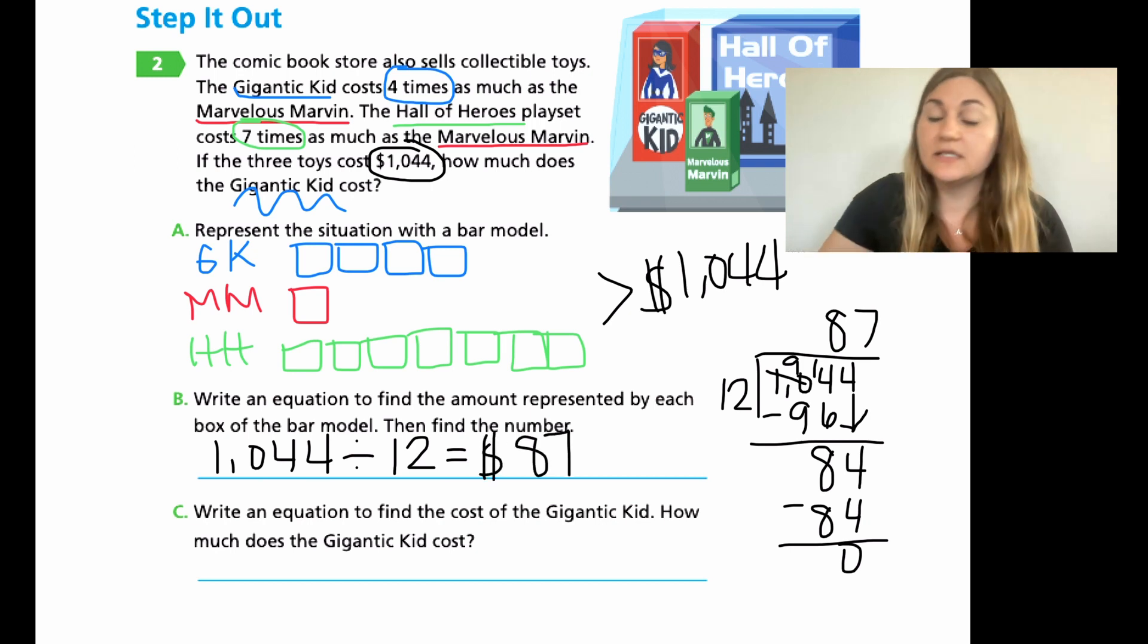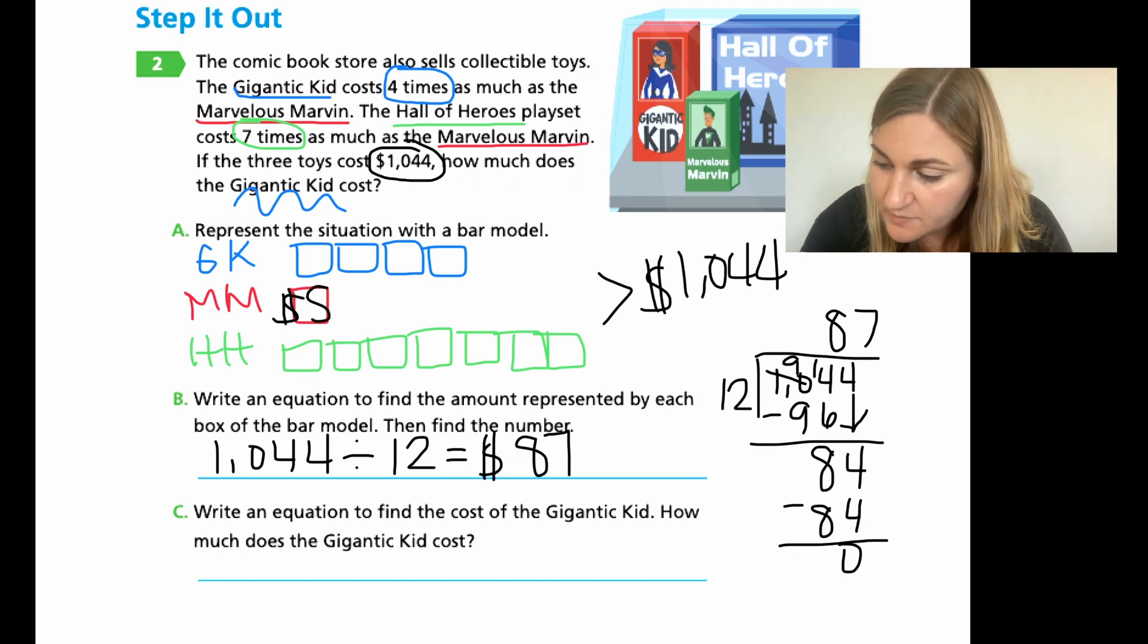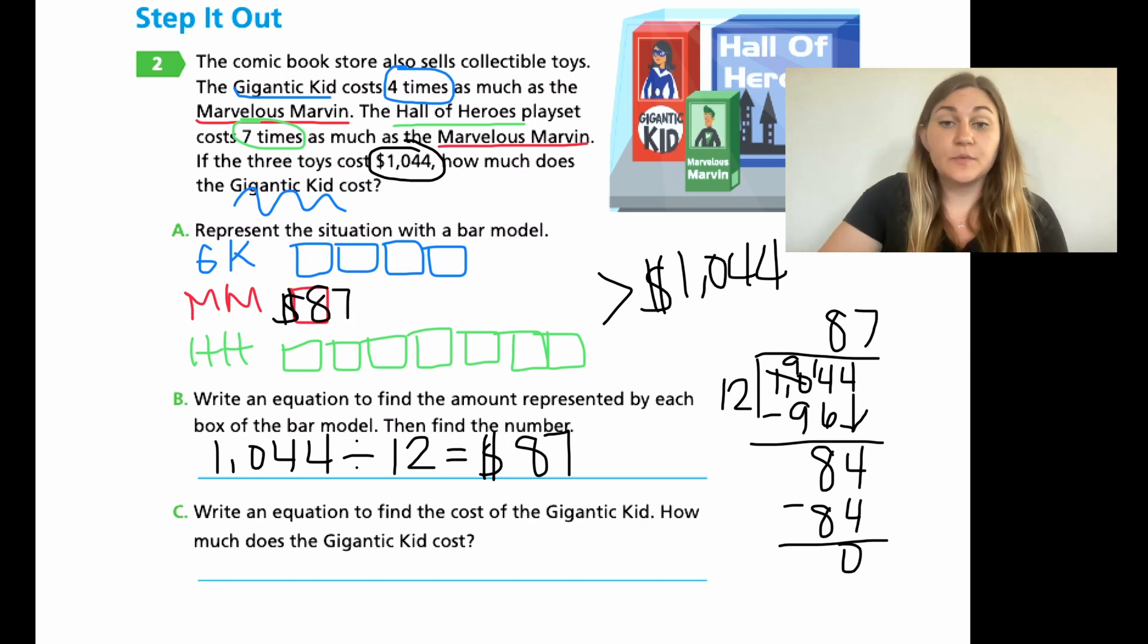So each box is worth 87. And again, we're dealing with money. So each of those boxes is worth $87. So I'm just going to make a note that the Marvelous Marvin is worth $87. And if we weren't being careful, that's where a lot of students would stop. I found my answer. I did my division. The answer is 87. But for this specific problem, that's incorrect. We want to keep moving forward because remember the question is asking, how much does the gigantic kid cost? Thankfully, there's another question to catch that for us in C.